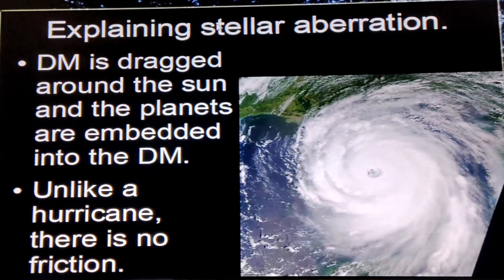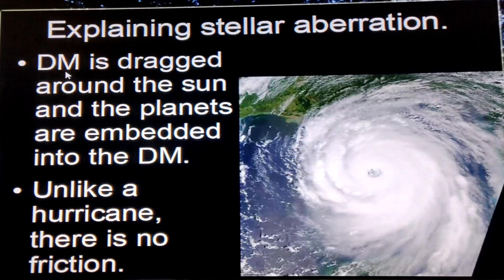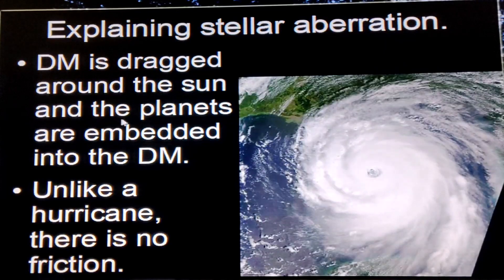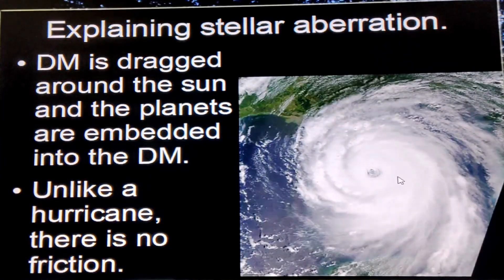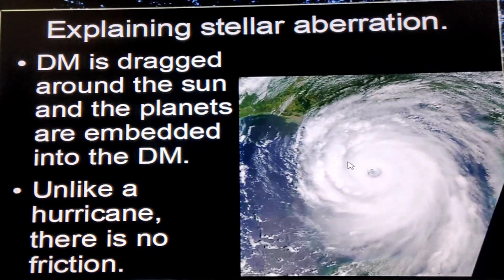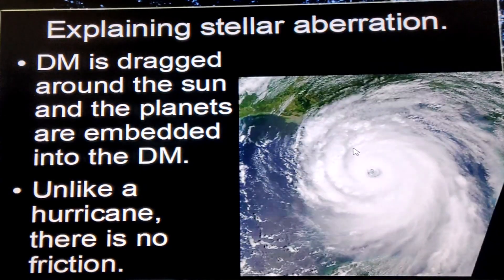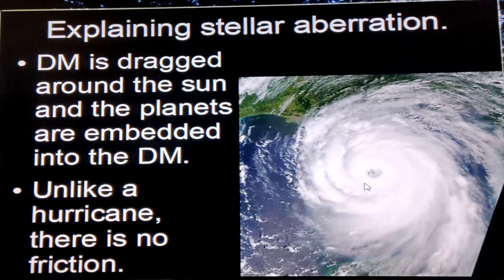Now let's explain stellar aberration. According to my model, dark matter is dragged around the sun, and the planets are embedded in that dark matter — it's as if the sun is at the center of a hurricane with dark matter spinning around it. If you have a leaf in a hurricane, the leaf travels around the eye of the hurricane. Of course, there's no friction in dark matter, so the motion is very smooth.